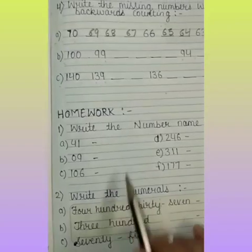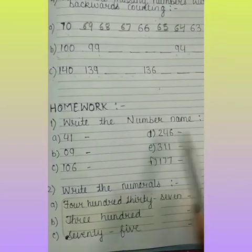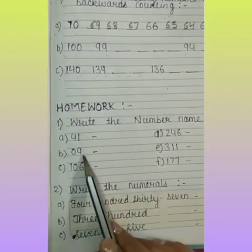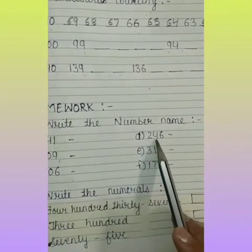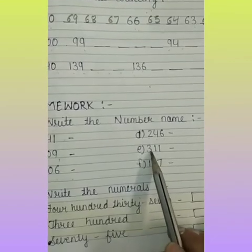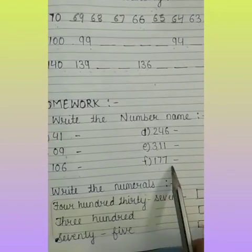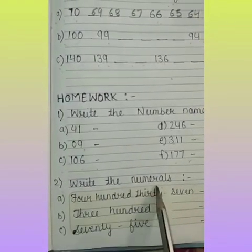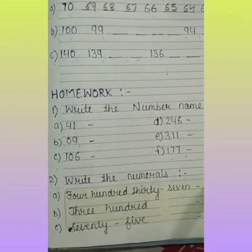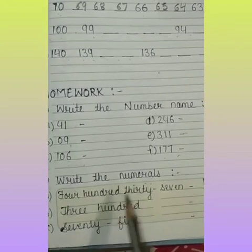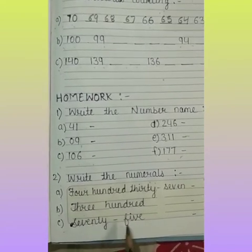Here is your homework. Question 1: write the number name for — A: 41, B: 9, C: 106, D: 246, E: 311, F: 177. Question 2: write the numerals — number name is given, write in figures — A: 437, B: 300, C: 75.